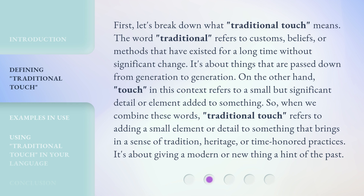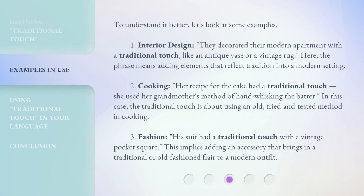So when we combine these words, 'traditional touch' refers to adding a small element or detail to something that brings in a sense of tradition, heritage, or time-honored practices. It's about giving a modern or new thing a hint of the past. For example, in interior design: they decorated their modern apartment with a traditional touch, like an antique vase or a vintage rug. Here, the phrase means adding elements that reflect tradition into a modern setting.